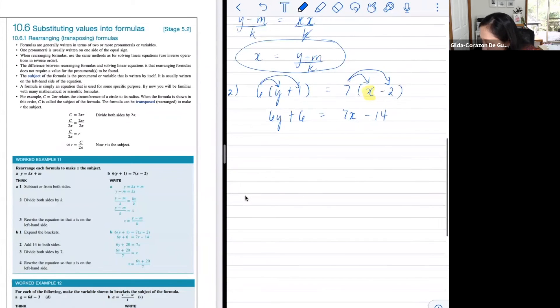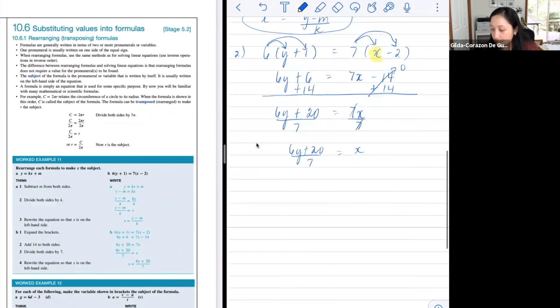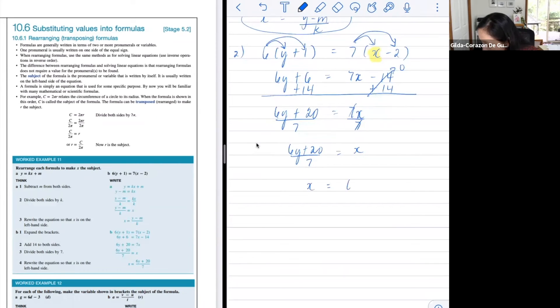We add 14 here, we add 14 there. We want to align the constants together, and therefore, we've got 6y plus 20 equals 7x. And then what? We want x by itself, so we want to divide both sides by 7. And therefore, we've got 6y plus 20 over 7 equals x. And just to make our x on the left-hand side, we just swap them around. So we say x is 6y plus 20 over 7.